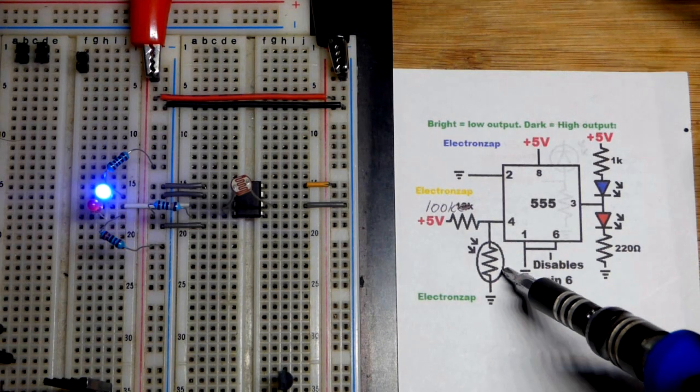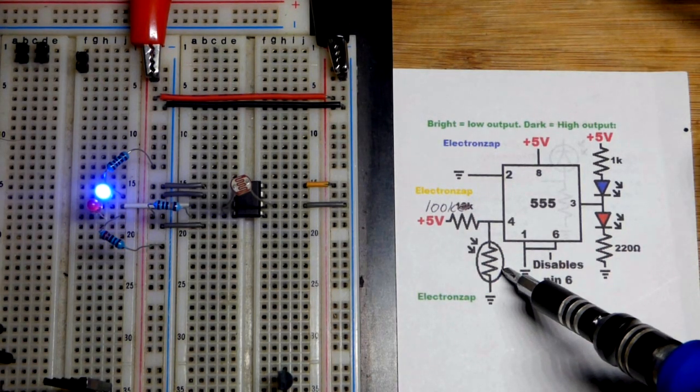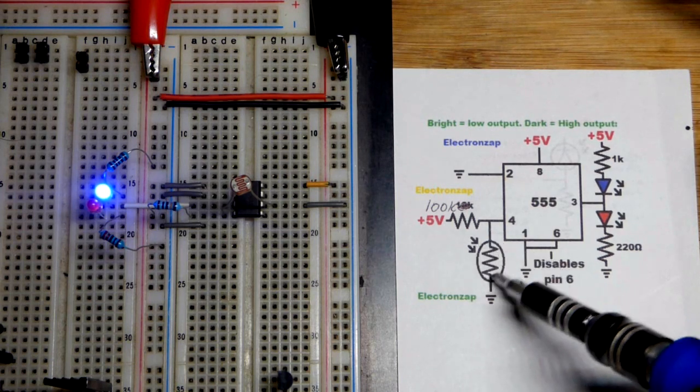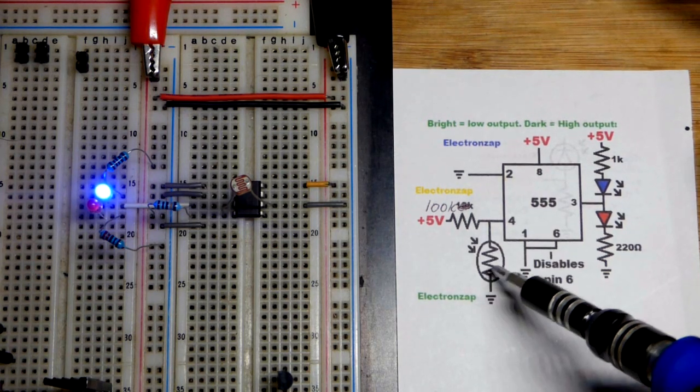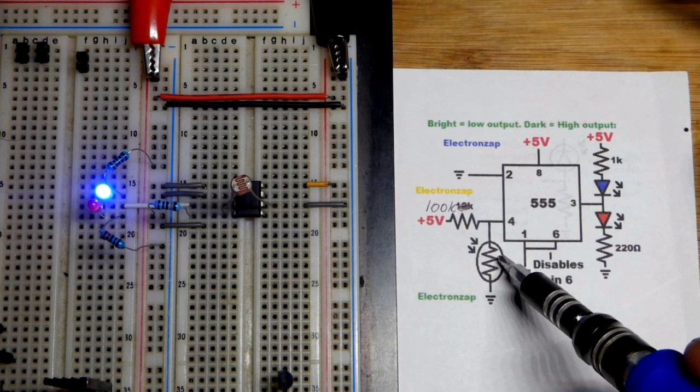In this video we have a circuit that looks like the circuit from the last video, except we have a light dependent resistor now instead of a photodiode. Light dependent resistors are more common.